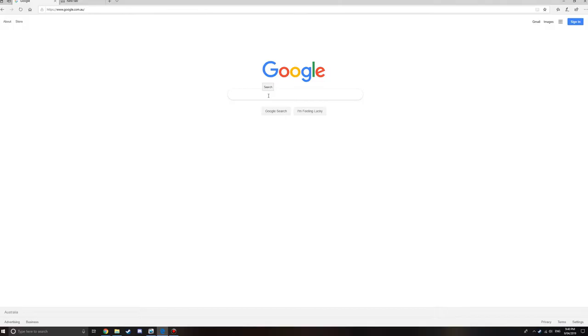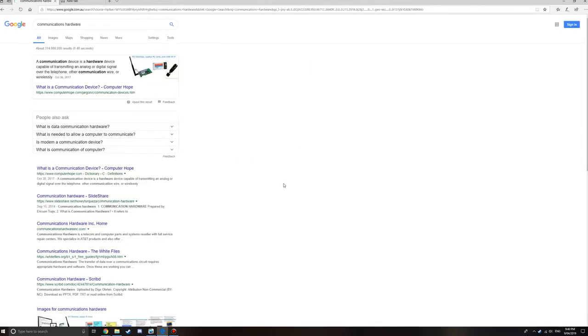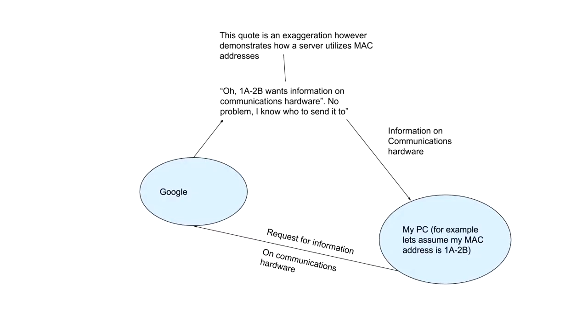For example, say you want to Google communications hardware. When the computer system sends this request to Google, Google must understand who to send the request back to so they can send the intended information towards you. A MAC address would allow Google in this situation to understand that you were the person who asked for information surrounding communications hardware, and thus return the data to your computer system specifically. A network interface card is required for a device to communicate with a network as it provides the device with an identifier so other systems can direct data accordingly.